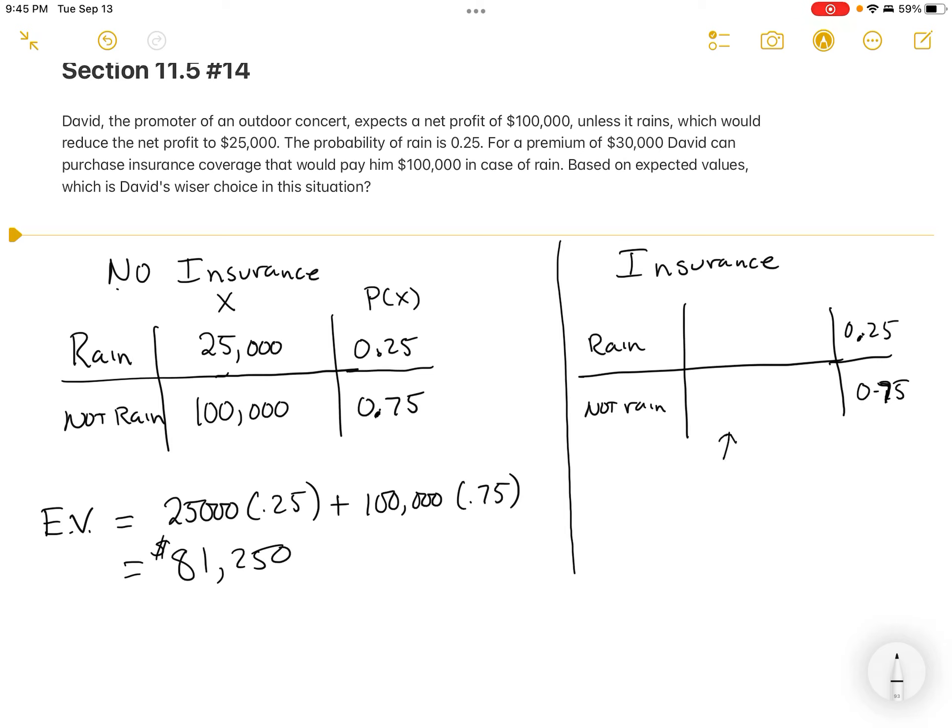Now, the number here is, if it doesn't rain, he gets $100,000 in profit, but it didn't rain, so he's out the $30,000 that he paid for insurance. So his net gain is $70,000 because he paid $30,000 for insurance that he ultimately didn't need. But he's willing to sacrifice that for a larger profit if it rains. So if it rains, let me get rid of this, you can back the video up if you need to see that again. If it rains, he's going to get $100,000 from the insurance policy.